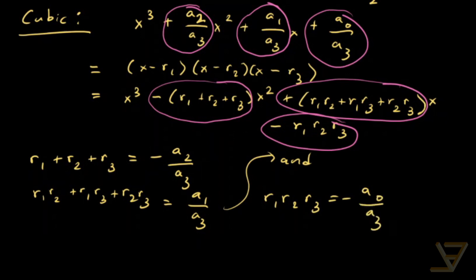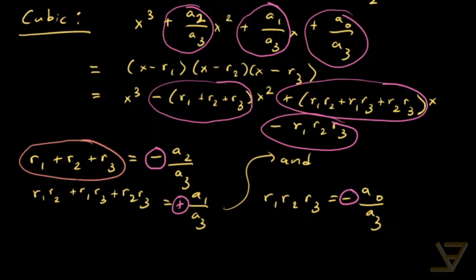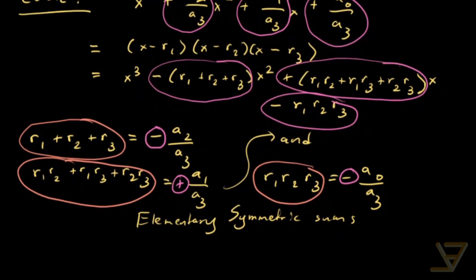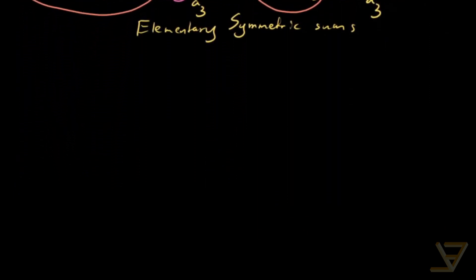A couple of patterns emerge here. First, we have alternating signs — negative, positive, negative — so it looks like we're going to have a factor of (-1)^k of some sort. The other thing is that these sums are symmetric in the roots involved, which is why we call them symmetric sums — specifically, elementary symmetric sums. Because out of these, we can build all other symmetric sums; I believe that's called the fundamental theorem of symmetric polynomials.